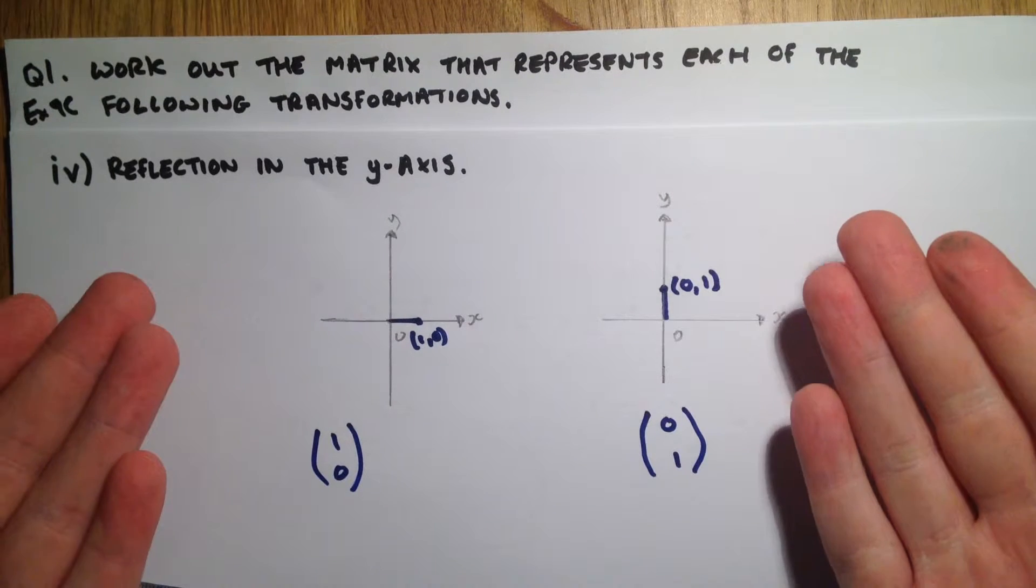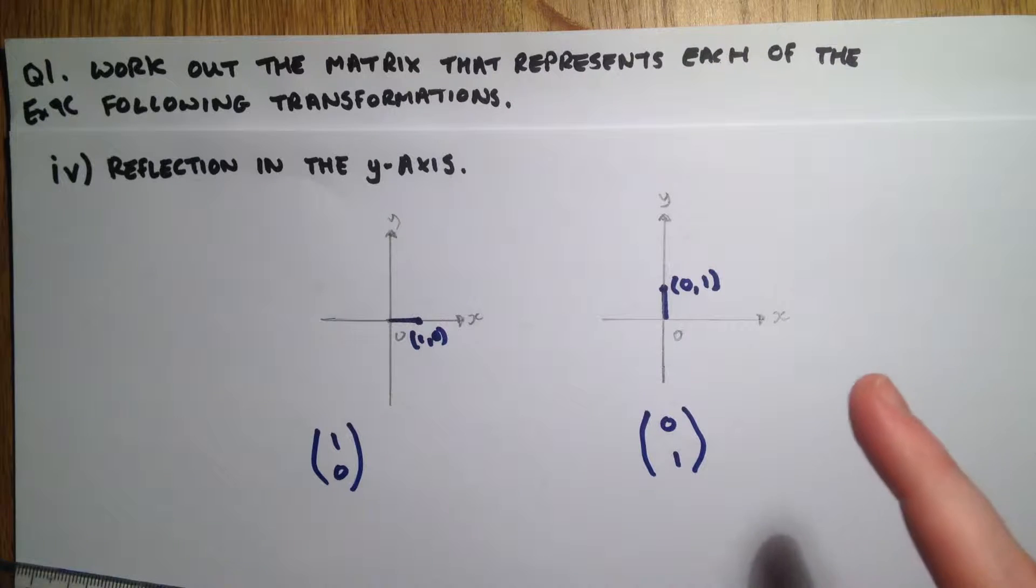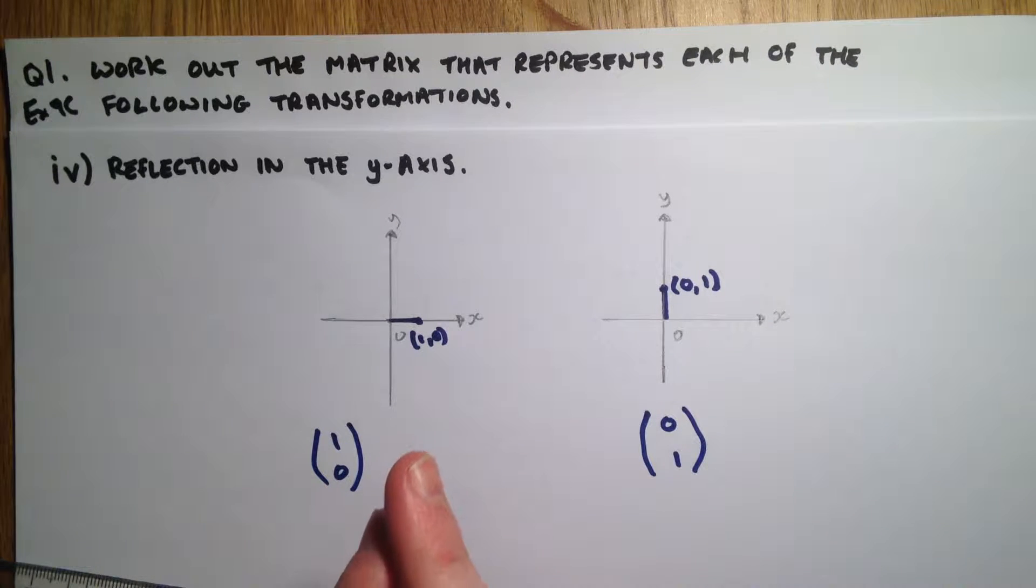I'm starting off this question with the axes already drawn. I've got my two vectors on, my one zero, my zero one takes me to the coordinates one zero and zero one.